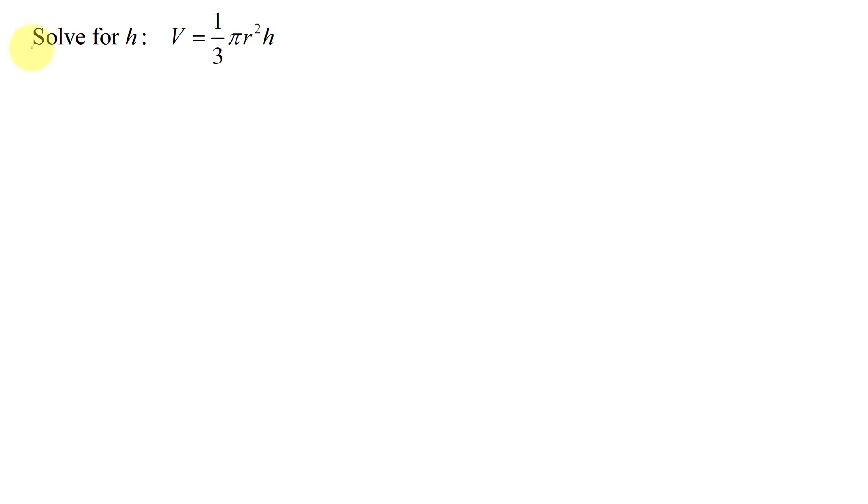In this example, I need to solve for h in the equation v equals one-third pi r squared h. This equation is the equation to find the volume of a right circular cone, and so I'm going to have to solve a formula or literal equation for a specified variable.